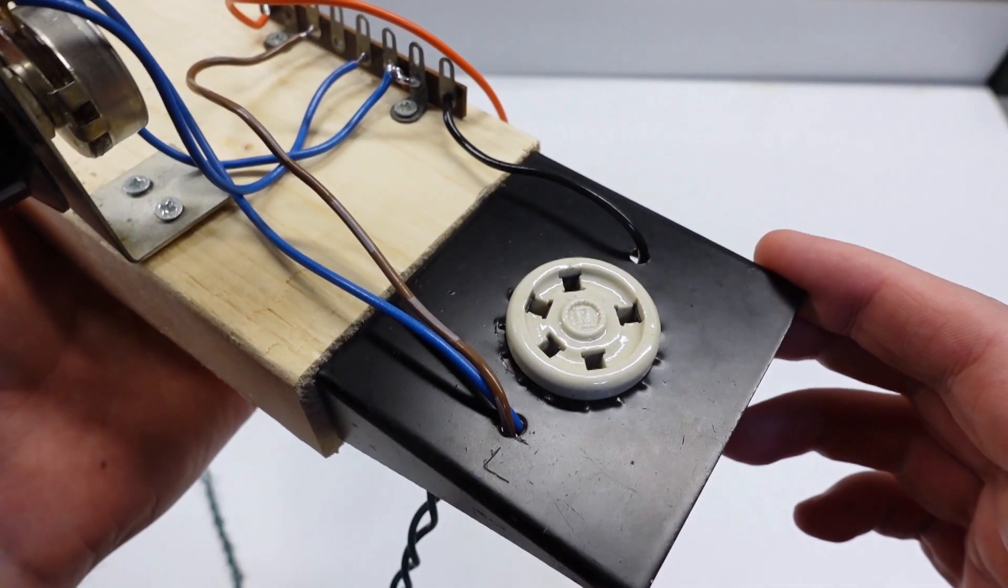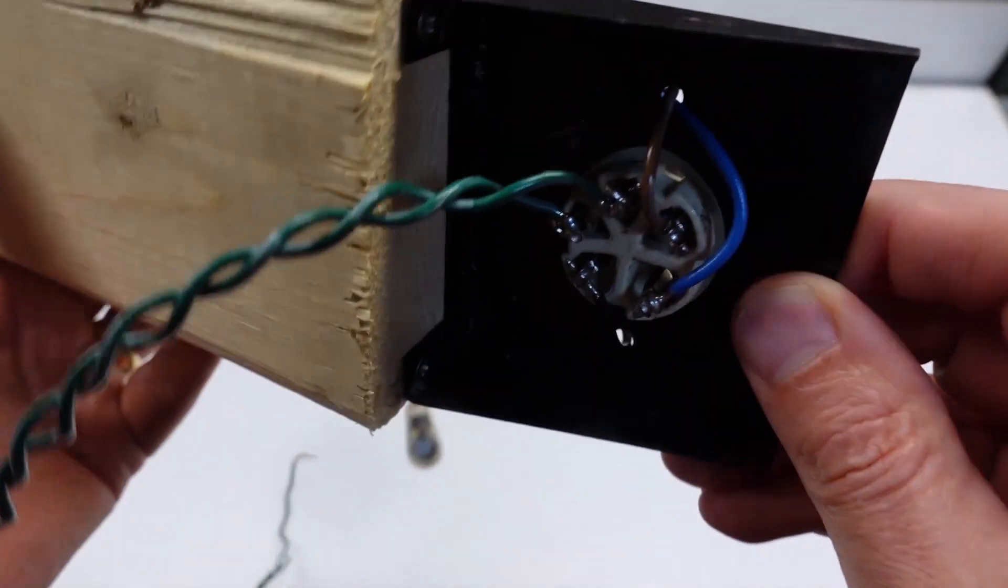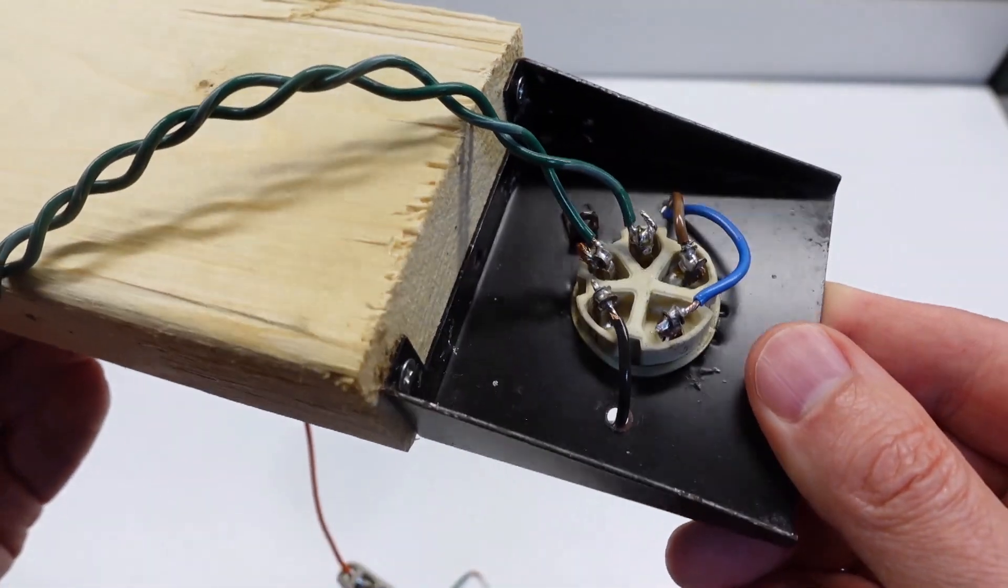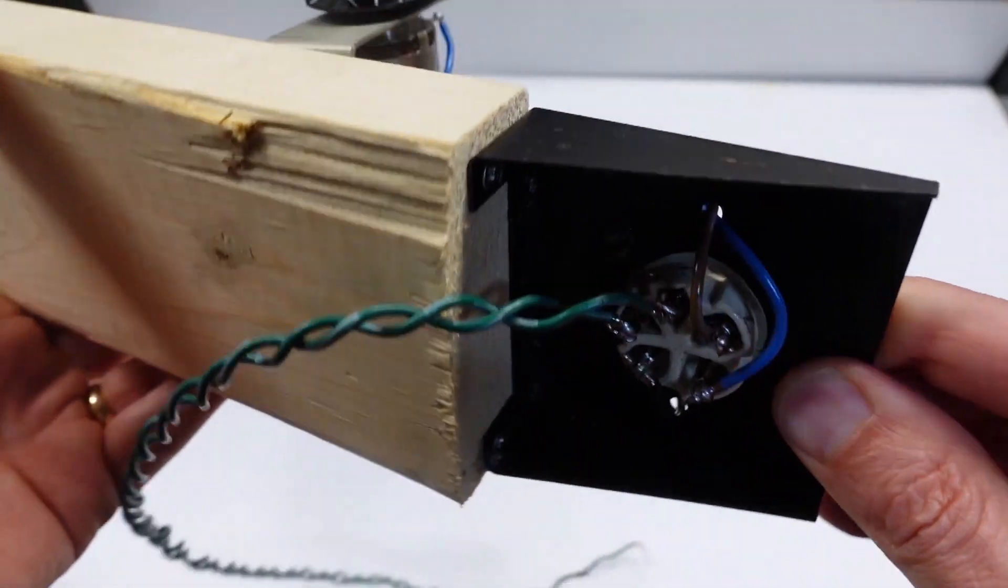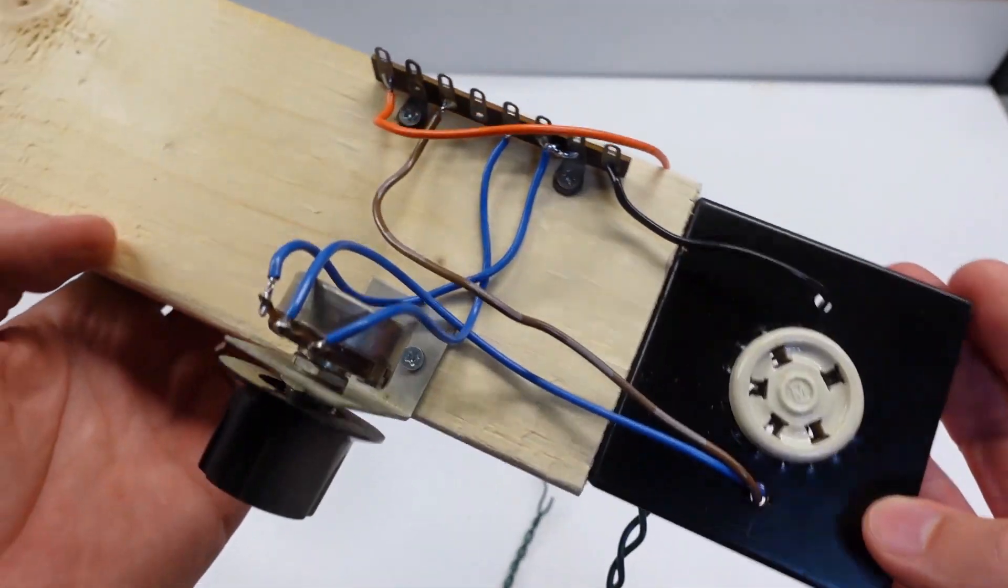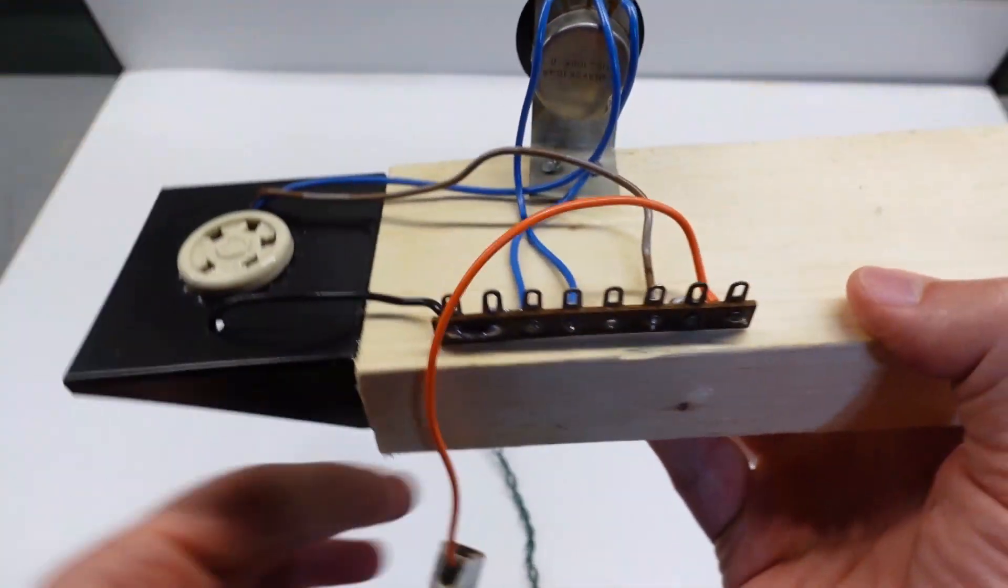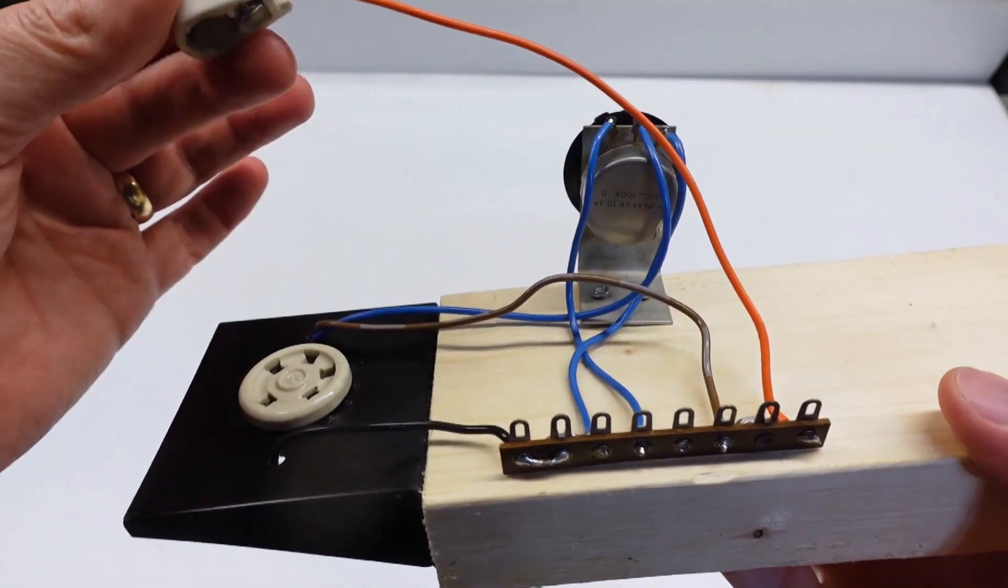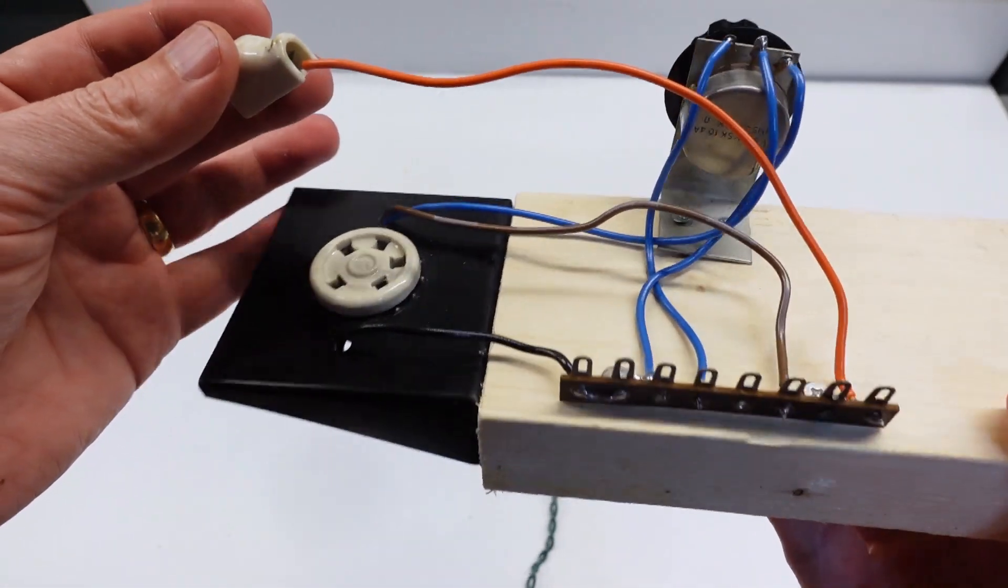I'll need a fixture to properly hold the 807s, and luckily in my junk box I already had an appropriate socket. All I needed to do was mount it to a scrap piece of 2x4, add a pot to let me vary the grid voltage, wire it up to a header, and I was good to go. Now let's test some tubes.